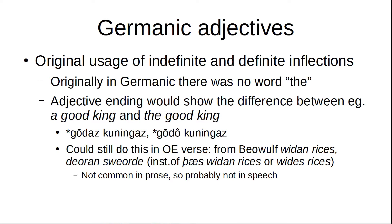From Beowulf, there is Weedan Ríces and Deoran Swerde. Weedan Ríces means the genitive of 'the wide kingdom,' and Deoran Swerde is the dative of 'the dear sword.' We've got Weedan Ríces instead of Thas Weedan Ríces, which means the same thing but has the word 'the,' or Weedas Ríces, which would mean 'a wide kingdom' in the genitive. This wasn't common in prose, though, so you don't have to think about doing it that way — that's just kind of a poetic thing.